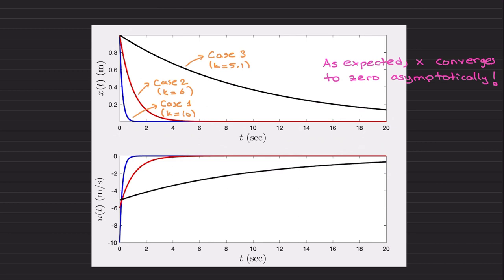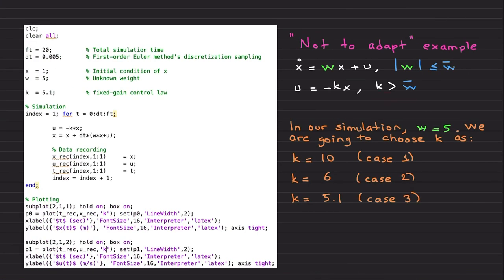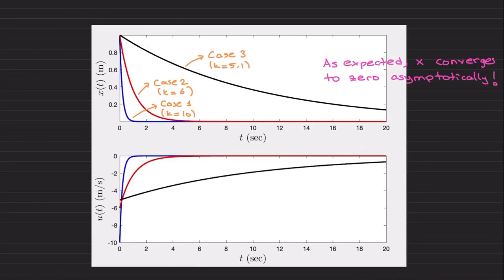This is one of the known issues for fixed gain robust control type architectures about performance. I discussed this when I compared robust control and adaptive control in the very first video, Introduction to Adaptive Control and Learning. It's at the top of the playlist. For this video I'm not going to make it a big deal, but this is one of the problems. The main thing is, as long as you choose your gain k more than w bar, as expected from the Lyapunov stability analysis performed in the previous video, x converges to zero asymptotically.